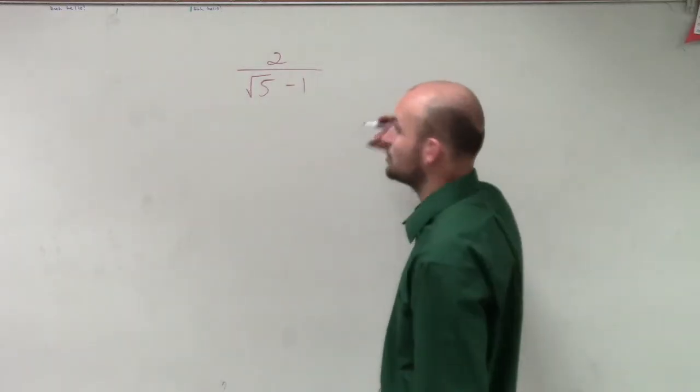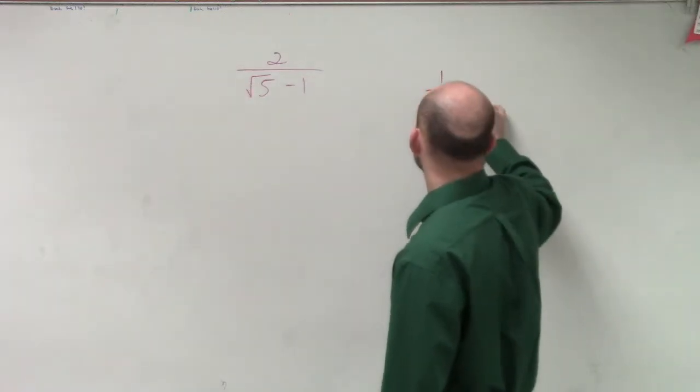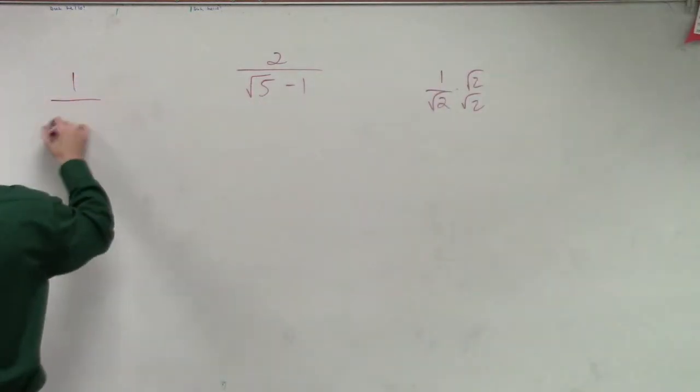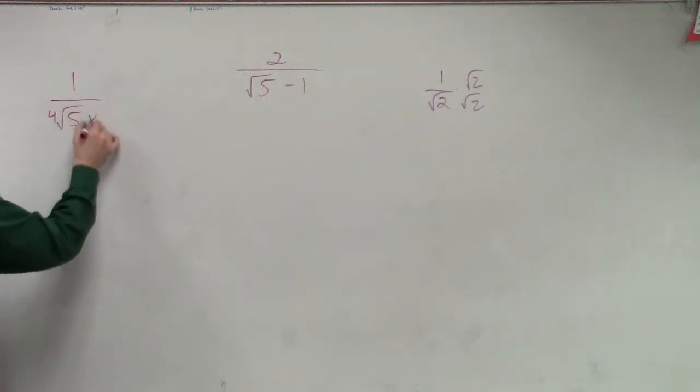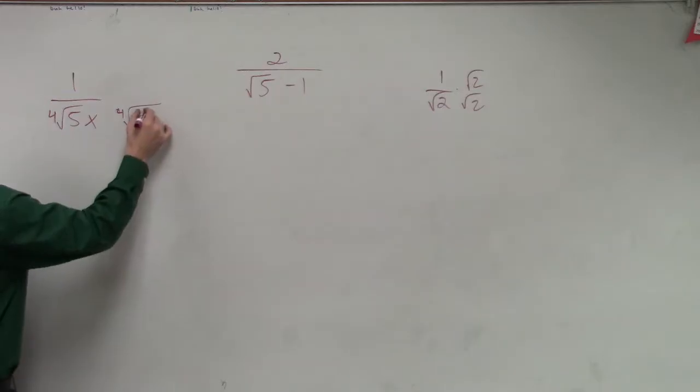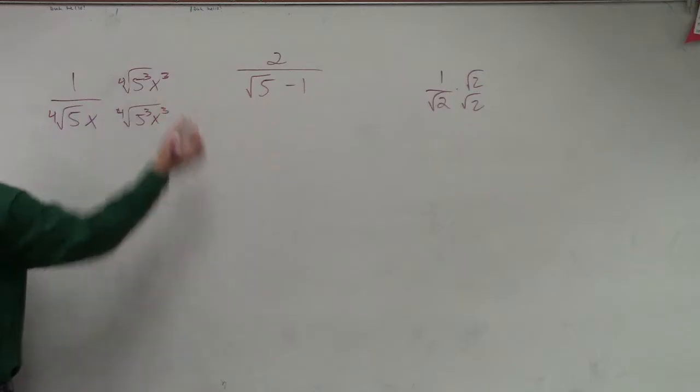Now, ladies and gentlemen, we've already talked about two different scenarios. We talked about when I have 1 over the square root of 2, we rationalize the denominators. And then we talked about when we have the fourth root of 5x, that we have to take the fourth root of 5 cubed x cubed. And we talked about why we need to do that for both of those terms.